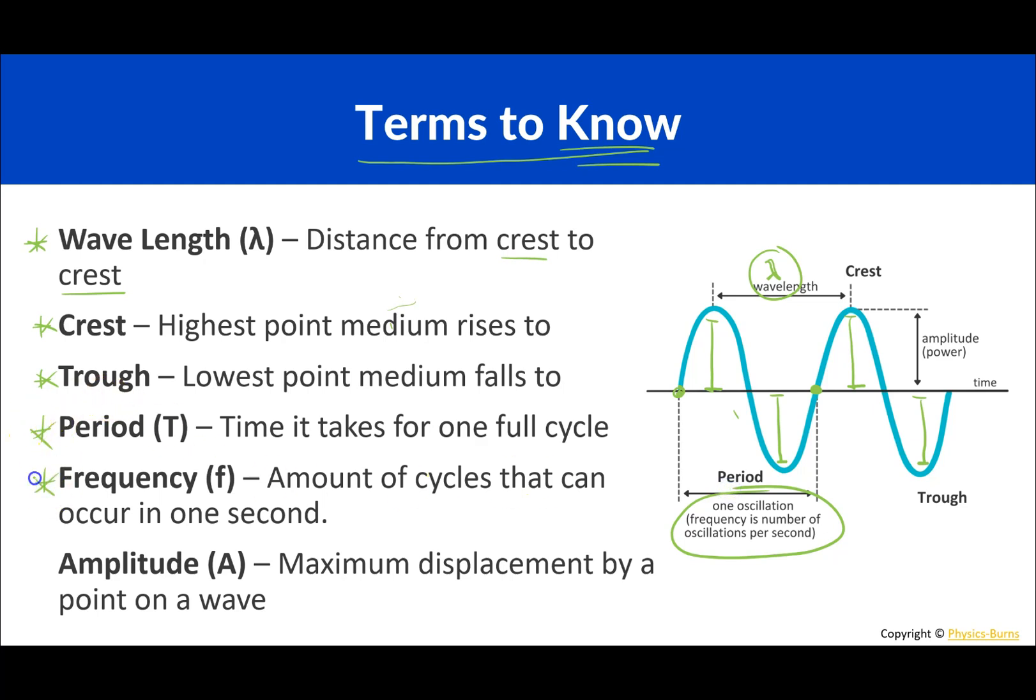Frequency is the amount of cycles that can occur in that one second. So if something goes back and forth a lot in one second. Let's say in this example we got one two three four five six around seven cycles in one second. But if something slower like this maybe in one second it only goes one time or half a time or something like that. But that's what a frequency is. A little bit confusing but as we do example problems we'll learn more about it.